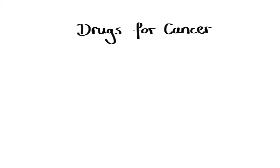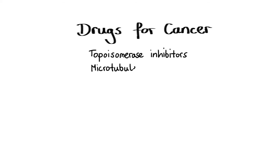In our previous lecture on pharmacology of drugs used for treatment of cancer, we covered anti-metabolites, which tend to exert greatest cytotoxicity in the S phase of the cell cycle. In this presentation, we'll shift our focus to agents that mostly affect the last two phases of the cycle, the G2 phase and the M phase, namely topoisomerase inhibitors and microtubule inhibitors.